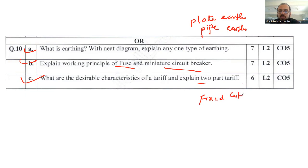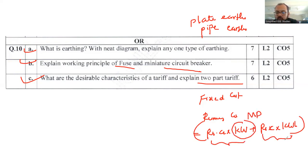Two-part tariff has two components: one is fixed cost and the other is running cost. Rupees A into kilowatts plus Rupees C into kilowatt-hour. Fixed cost depends on maximum demand, while running cost depends on the number of units consumed.